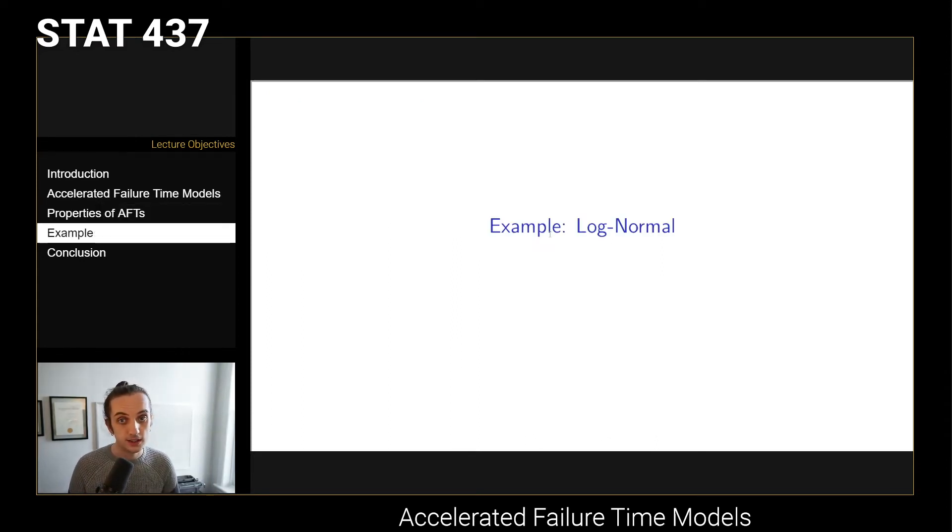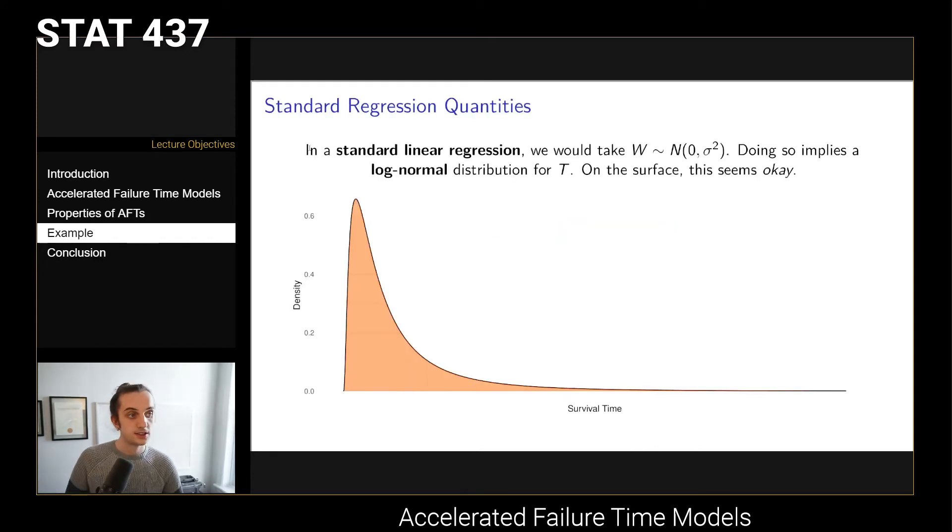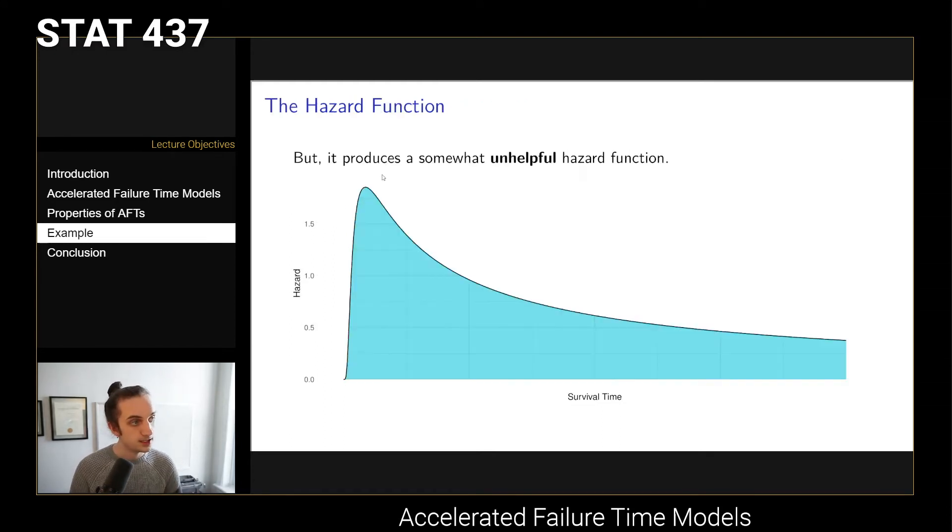As a brief example, we could look at the log normal density here. In a standard linear regression, we would take our error term to be normal zero sigma squared, and doing this implies a log normal distribution for T. Here we have the density for a log normal distribution. It's bounded below at zero and it does trail off into the tail. It's got a long tail. This seems like an okay distribution for survival time. But if you actually take a look at its hazard function, the hazard function has this weird shape.